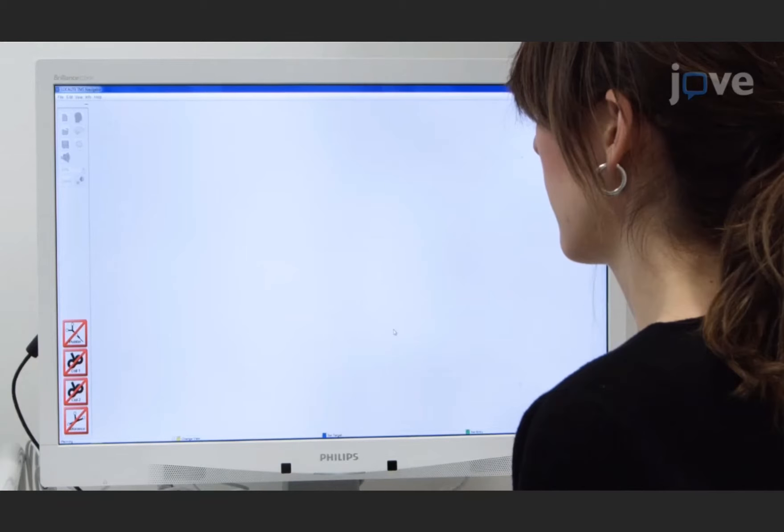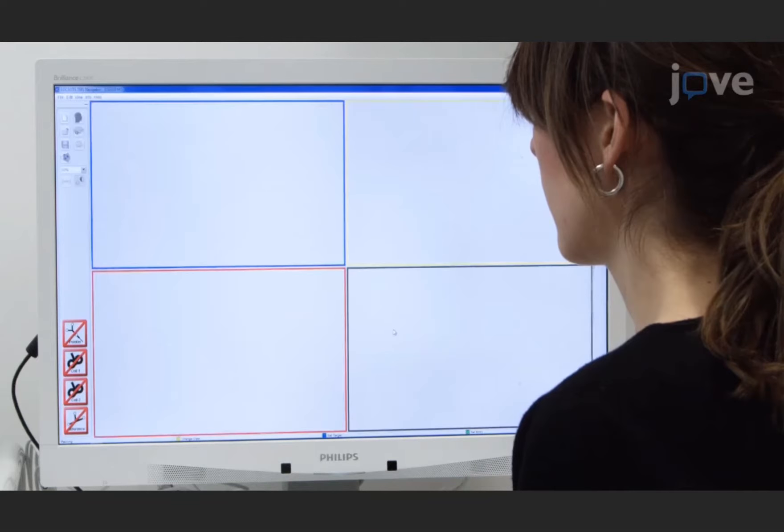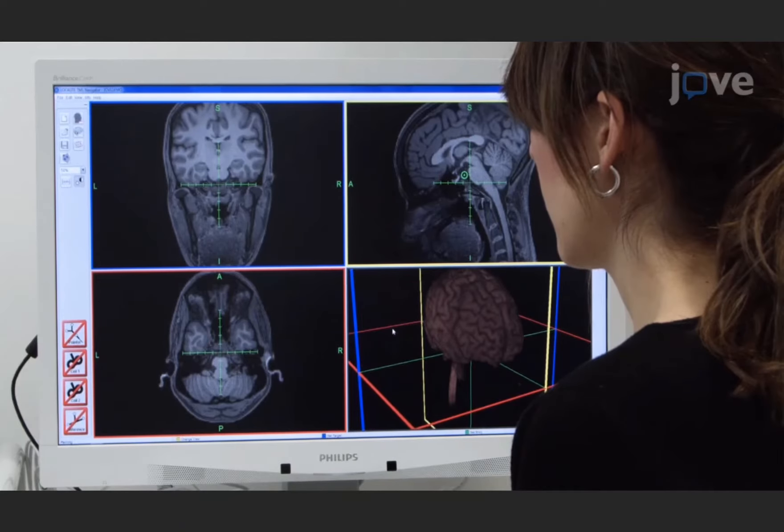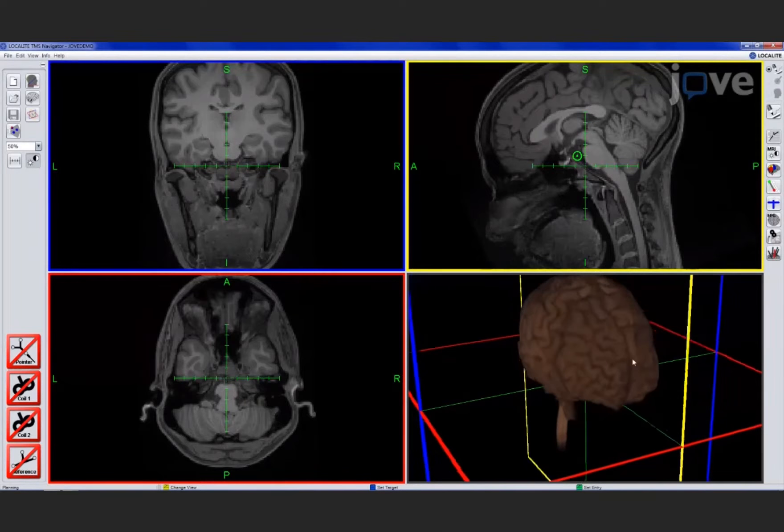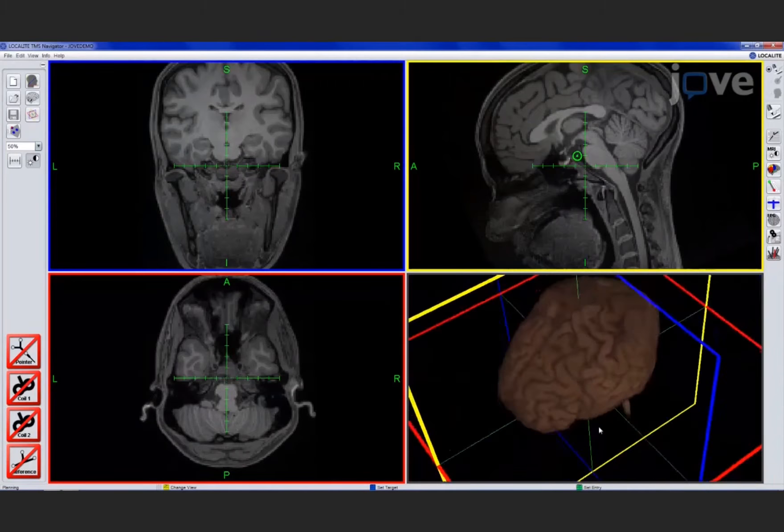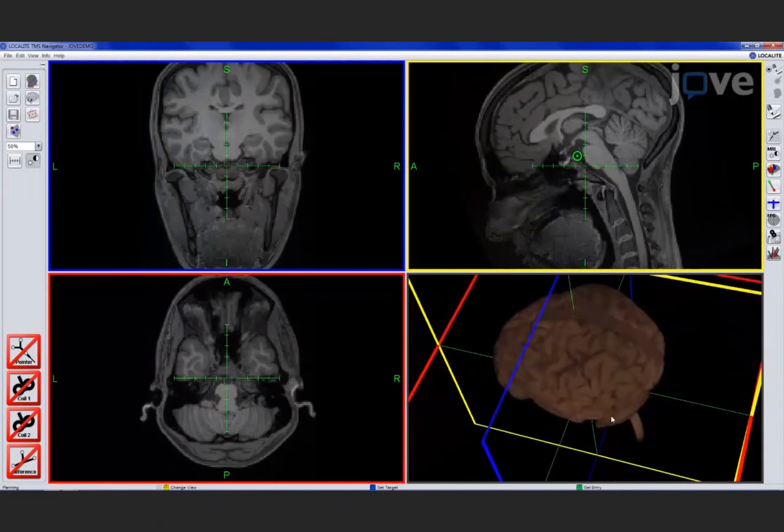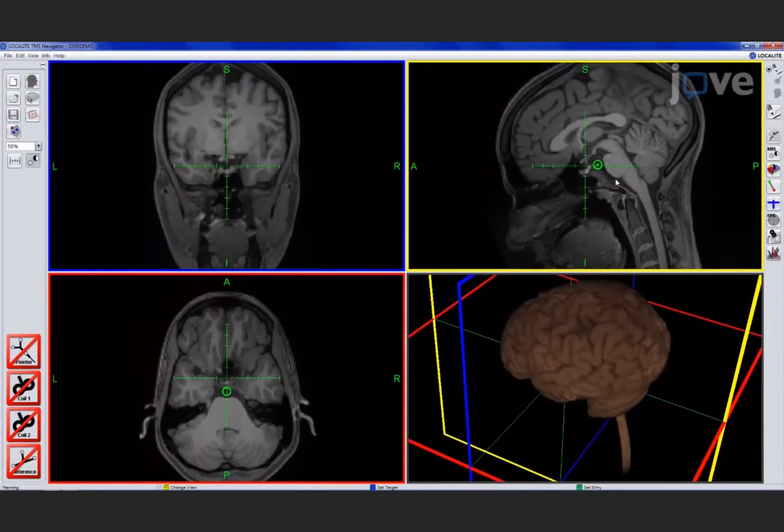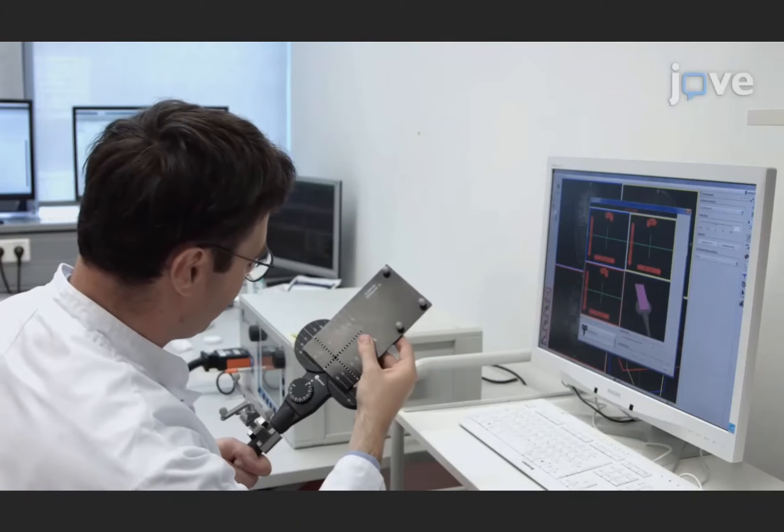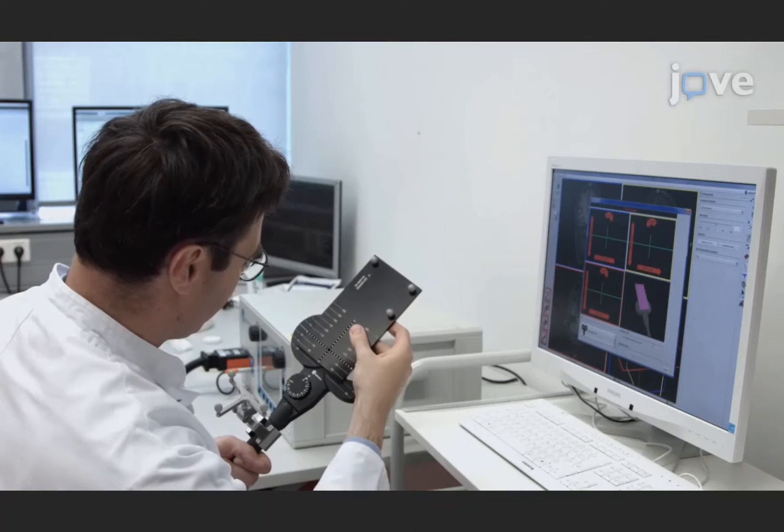To monitor the coil position and to achieve accurate and consistent TMS targeting within and across sessions, load the individual structural MRI data into the navigation system software prior to starting the experiment for each participant. Then attach a coil tracker to the stimulation coil and calibrate the coil.